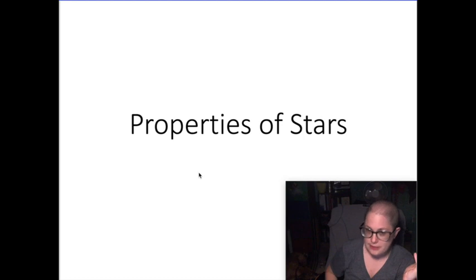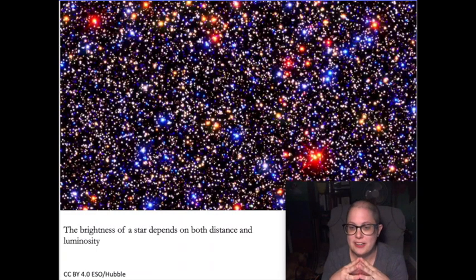When you look out at a star field, such as this gorgeous picture with the Hubble Space Telescope, you notice a couple things. You notice there are stars of different brightnesses and that there are stars of different colors.